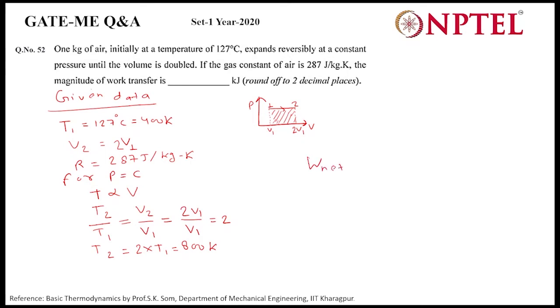W net equal to P times V2 minus V1. But here we don't have data for the pressure and volume, so we will use the ideal gas equation.